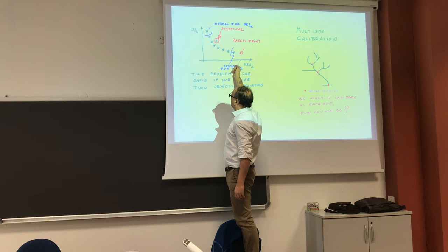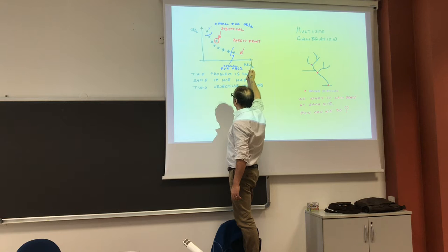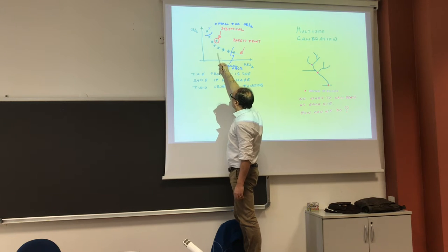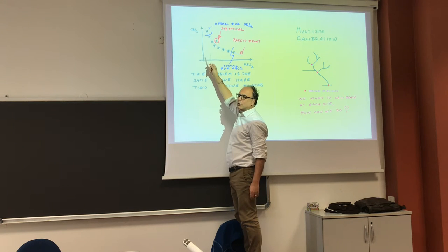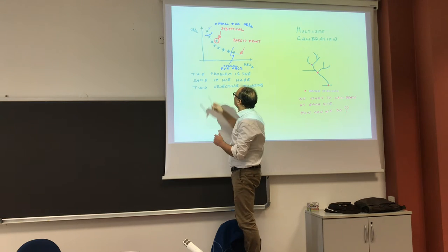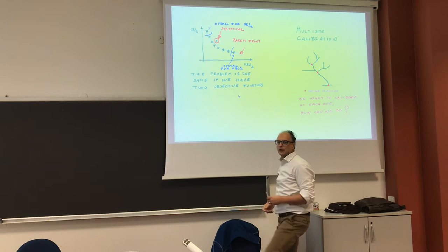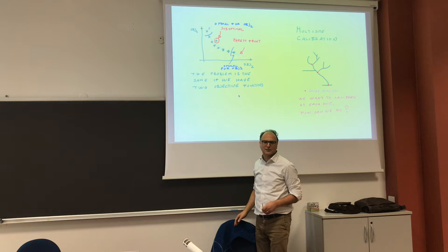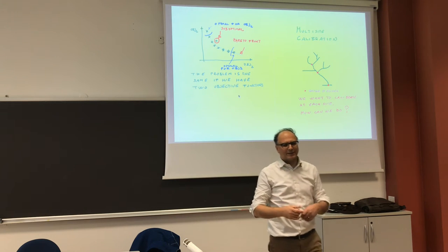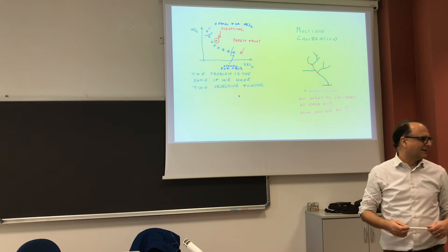The ones we have on this side are good for objective two because we are going to zero for objective two, but we are far from zero for objective one, or the contrary. So we have to deal with these solutions. If we have three parameters we have Pareto surfaces. If we have four parameters we have Pareto hyper surfaces, so things become even more complicated.